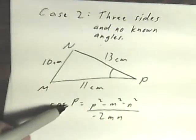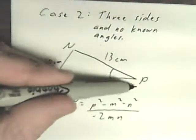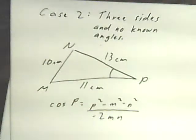Again, the letter by the cosine is the same as the letter of the side opposite it. So that side there, that angle P goes with 10 centimeters. Now I'll just plug in the numbers that I know.